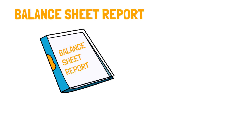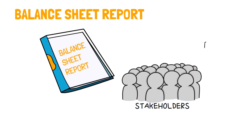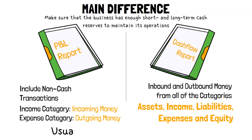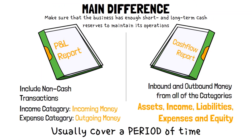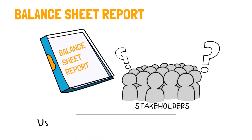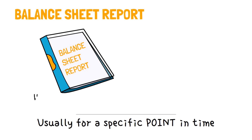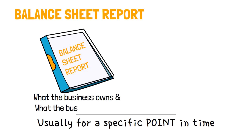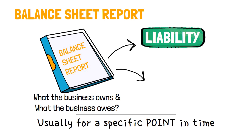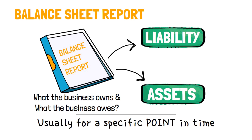The balance sheet report, on the other hand, addresses more the question of who has claims to the assets of the business at any given point in time. You would see that the P&L report and the cash flow report are usually covering a period of time, while the balance sheet is usually for a specific point in time. The balance sheet starts with a clear statement of the assets of the business — that is, what the business owns — and that is followed by a clear statement of what the business owes, that is, its liabilities. And finally, the difference between the assets and the liabilities would be what the owners of the business can lay a claim to, that is, the equity.